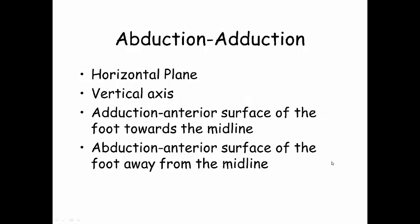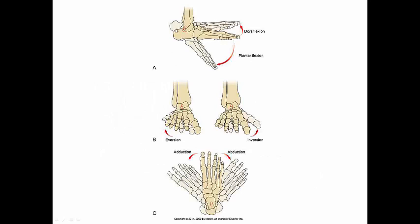The other motion is in the horizontal plane, through the vertical axis — it's abduction and adduction. Adduction is when the anterior surface of your foot, or your toes, are toward the midline. Abduction is when your anterior surface of the foot, or your toes, are away from the midline. Here is a view of this: dorsiflexion and plantar flexion occur at the talocrural joint, and you have eversion where the sole of your foot is pointing laterally, or inversion where the sole of your foot is pointing medially, and then adduction and abduction.